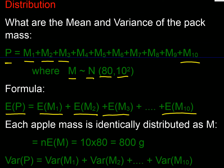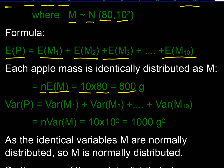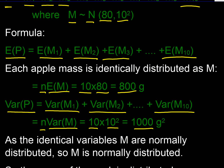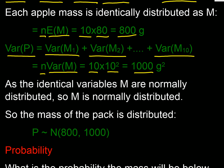Using the expectation formula, the expected packet mass is the sum of each apple's expected mass. Since they're identically distributed, that's n times the individual expected value: 10 × 80 = 800 grams. For variance, we add the variances of all 10 apples. Since they're identical, that's n times the variance of one apple: 10 × 10² = 1000 grams squared.